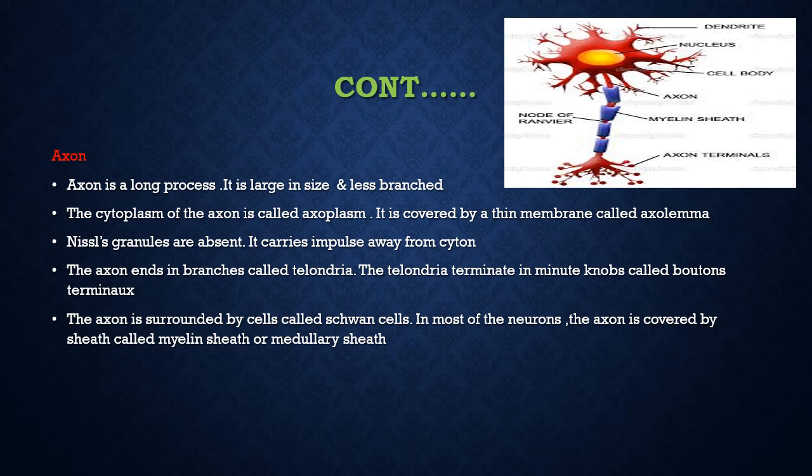The third part is Axon. Axon is a long process — it will be larger in size and less branched. This Axon is covered by a membrane called Axolemma, and inner to that is a fluid-like substance called Axoplasm. Nissl granules and mitochondria won't be present in case of the Axon. The main role of Axon is it carries impulse away from the Cyton. This Axon contains many branch-like structures called Telodendria.